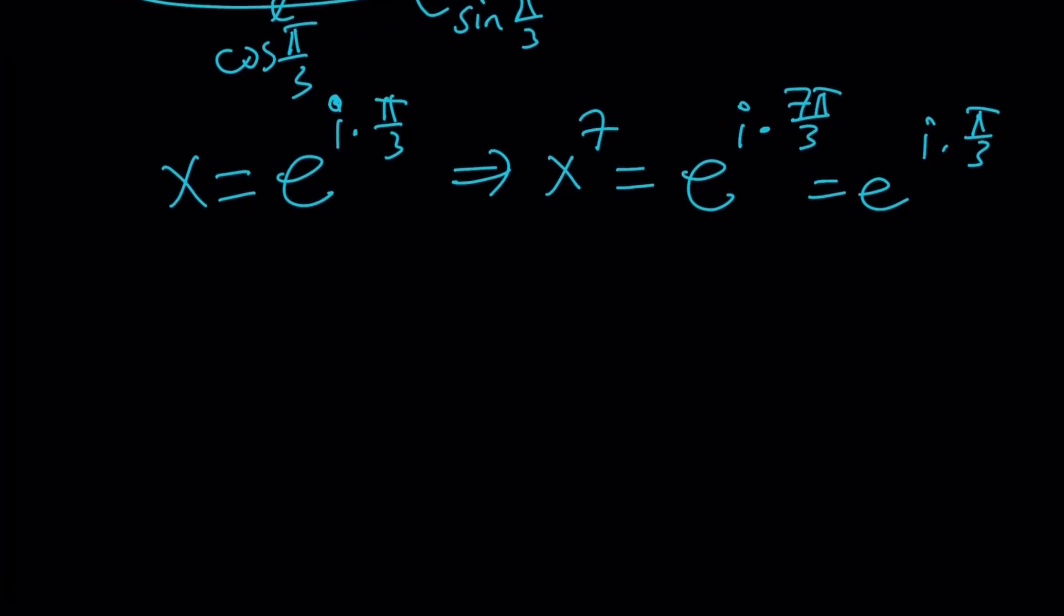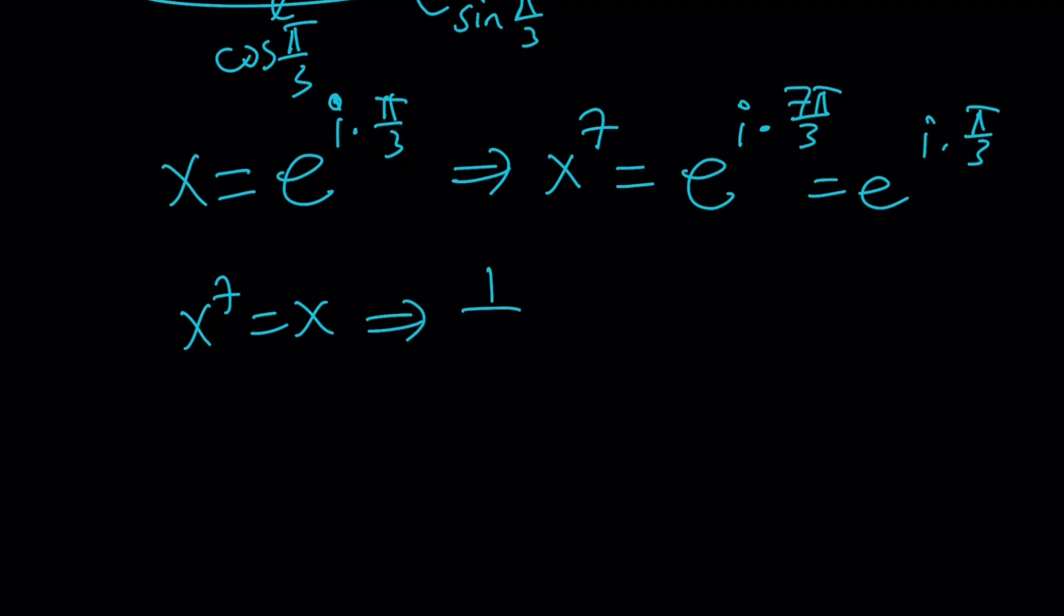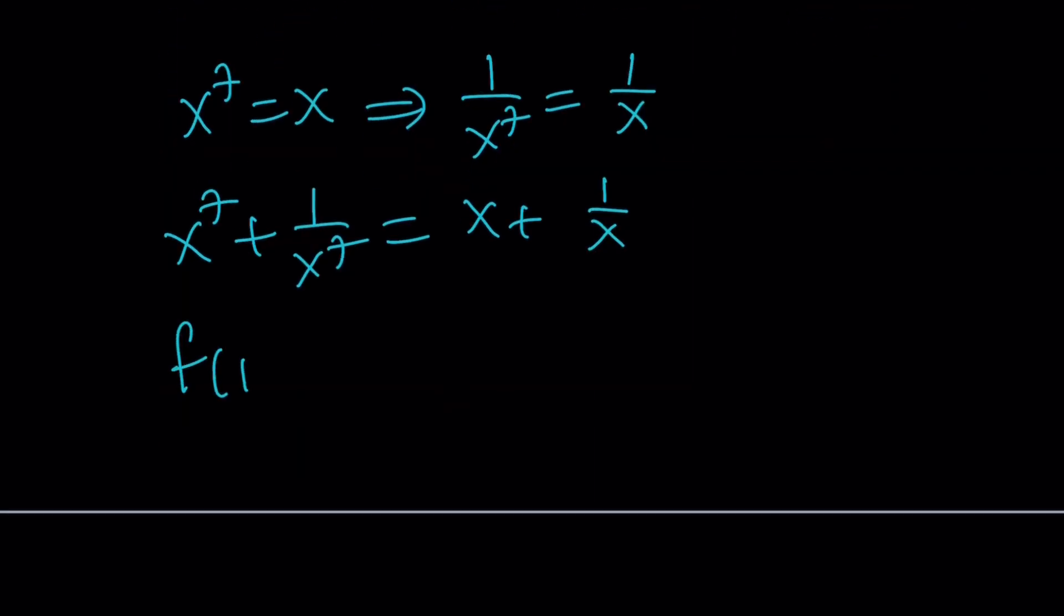So what does that mean? That means if x to the 7th equals x, then 1 over x to the 7th is going to be 1 over x. So x to the 7th plus 1 over x to the 7th is going to be the same as x plus 1 over x. Therefore, f of 1 for this equal to 1, this also equals 1. Therefore, f of 1 is just going to be 1. Does that make sense?